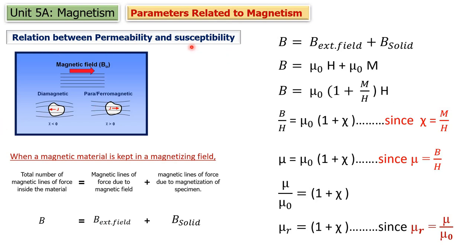Permeability and susceptibility have a very close relationship — their meaning is almost the same. Permeability refers to the property of the material that allows flux lines to pass through it. Susceptibility means the ease with which the material gets magnetized. Both describe how a material responds to an external magnetic field.